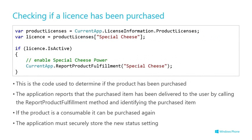Every time the application runs, you need to check what the user's current licensed situation is. For this you can call the CurrentApp.LicenseInformation API and get the product licenses — this pulls back the current situation for that particular user. Then you have an 'if license is active' check to determine whether to enable special features — 'cheese power' in this example. This is an example of fulfilling and offering certain features to the user that are controlled by in-app purchase licenses.